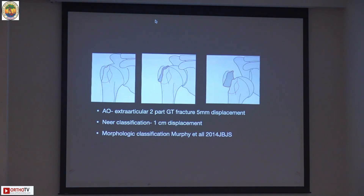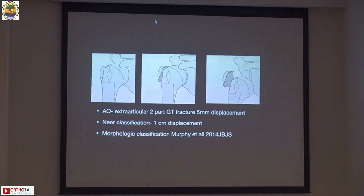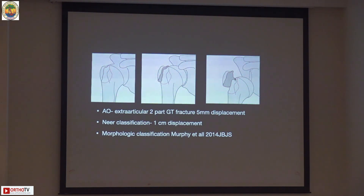The classifications: we all know the AO classification — it's an extra-articular two-part GT fracture with less than five millimeter displacement or more than five millimeter displacement. There are three subtypes: non-displaced, less than five millimeter displacement, and fracture-dislocations.